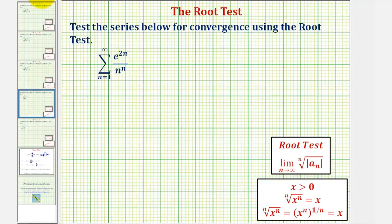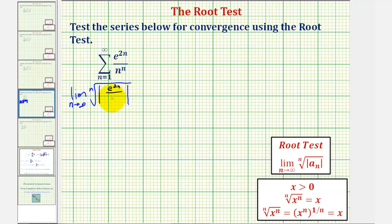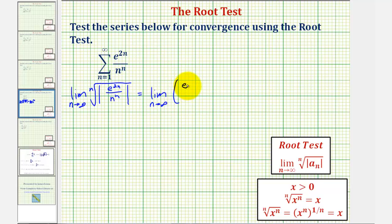Going back to our example, we'll begin by determining the limit as n approaches infinity of the nth root of the absolute value of e raised to the power of two n, divided by n raised to the power of n. In this case, let's rewrite the nth root as a rational exponent. Taking the nth root of something is equivalent to raising it to the one over n power. And because of the absolute value, we'll assume it's positive.